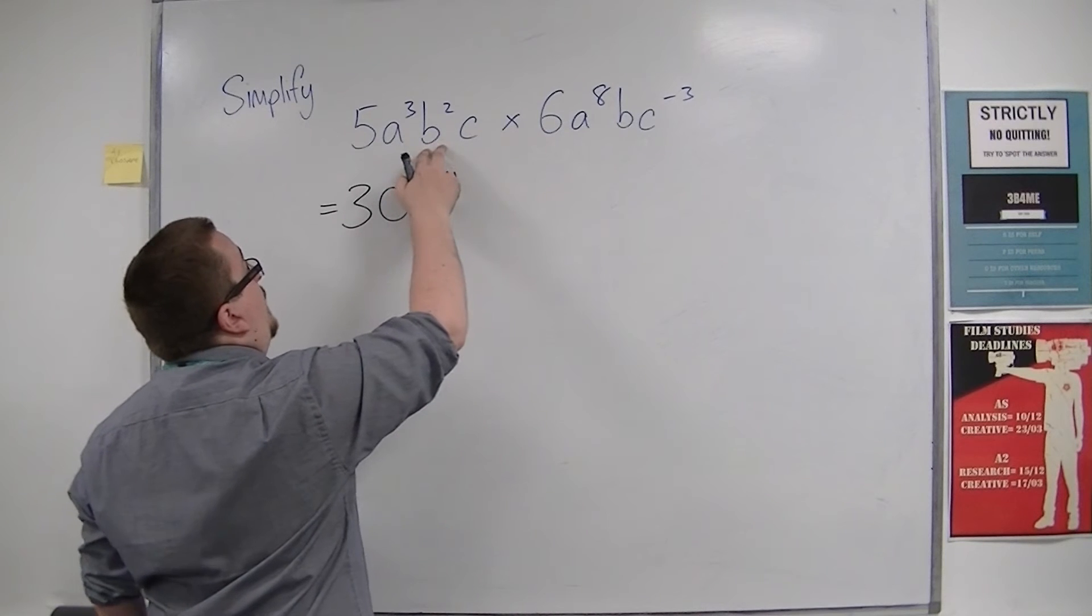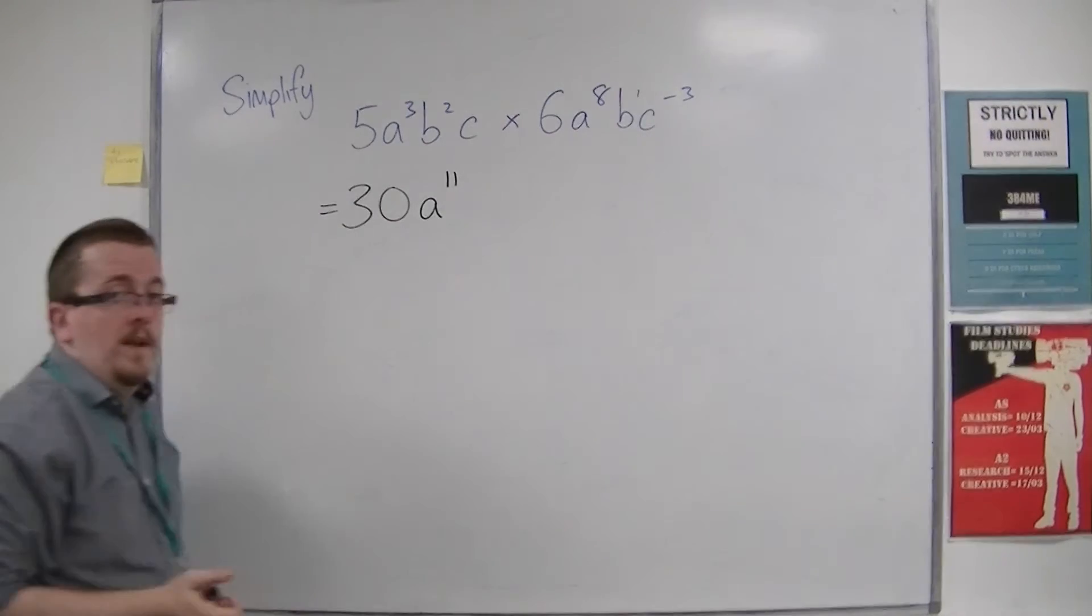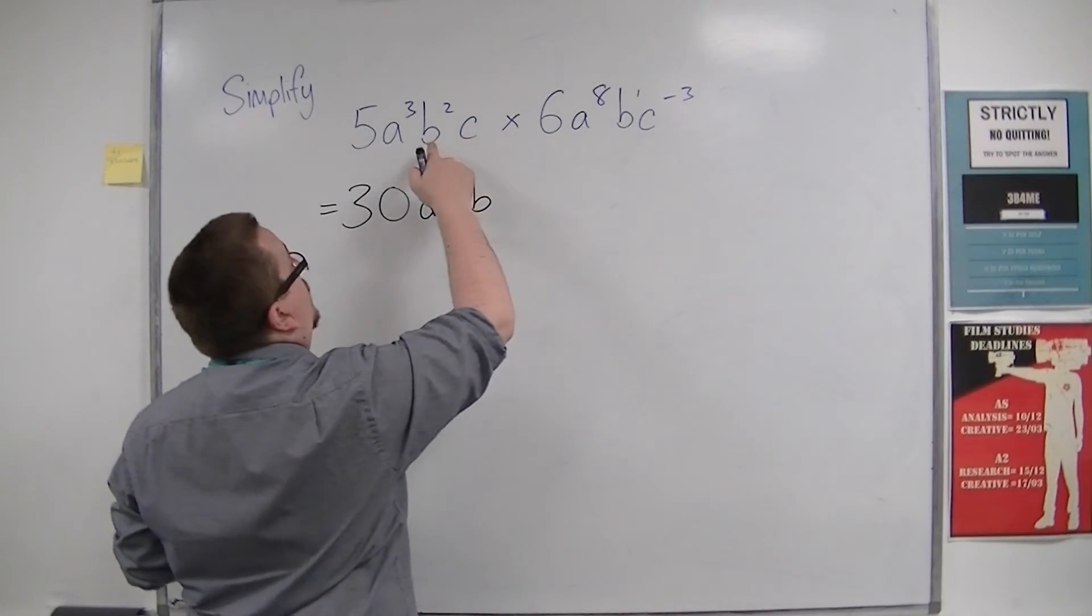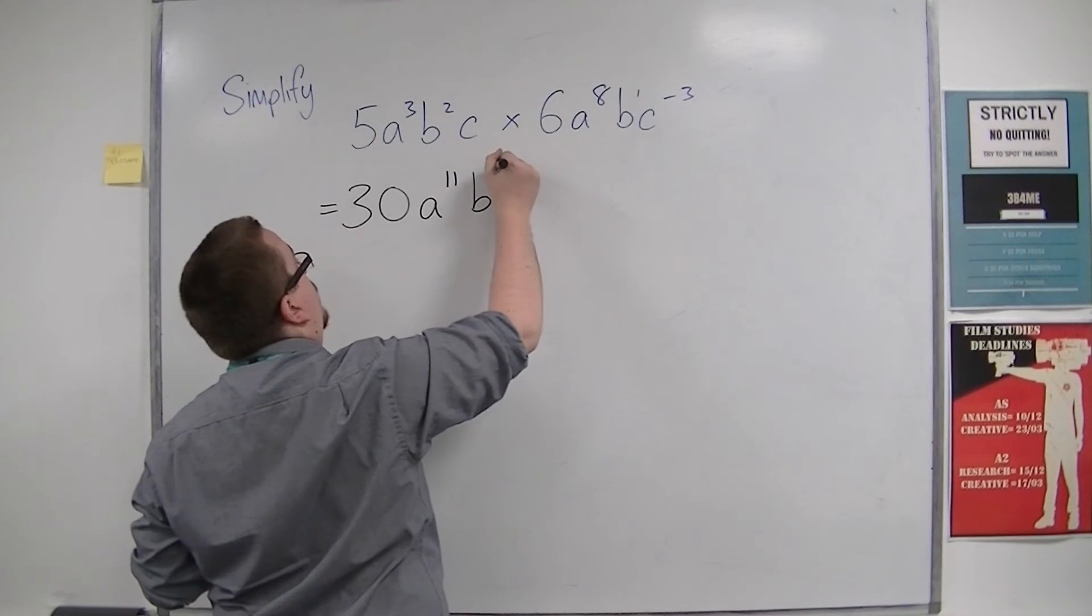Then we have b² times b. Now that singular b is just b to the 1. So in exactly the same way, that's b² times b¹, so the indices get added together. 2 plus 1 is 3.